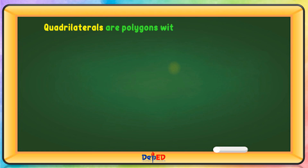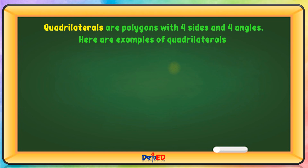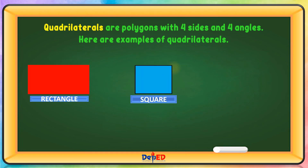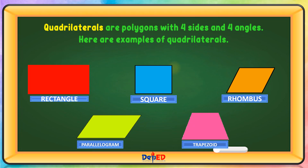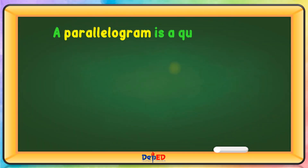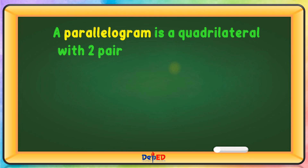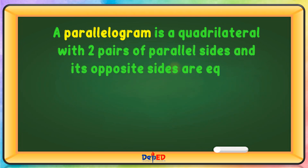Quadrilaterals are polygons with four sides and four angles. Here are some examples of quadrilaterals: the rectangle, the square, the rhombus, the parallelogram, and the trapezoid. A parallelogram is a quadrilateral with two pairs of parallel sides, and its opposite sides are equal.